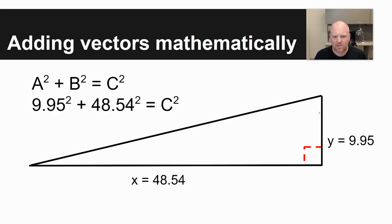Again, leaning back on some of our trigonometry background, you can solve for the c value using the Pythagorean theorem, a squared plus b squared is equal to c squared. And what we end up with is a c value, a hypotenuse value for this right triangle, that's 49.55.